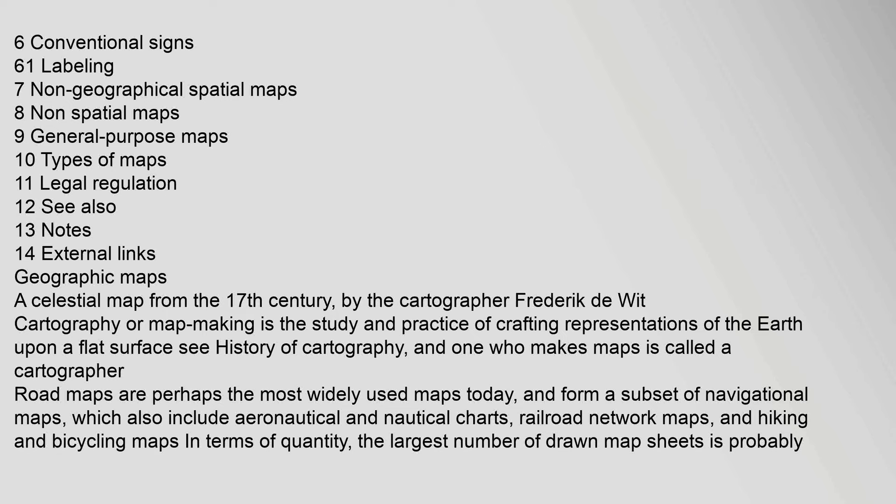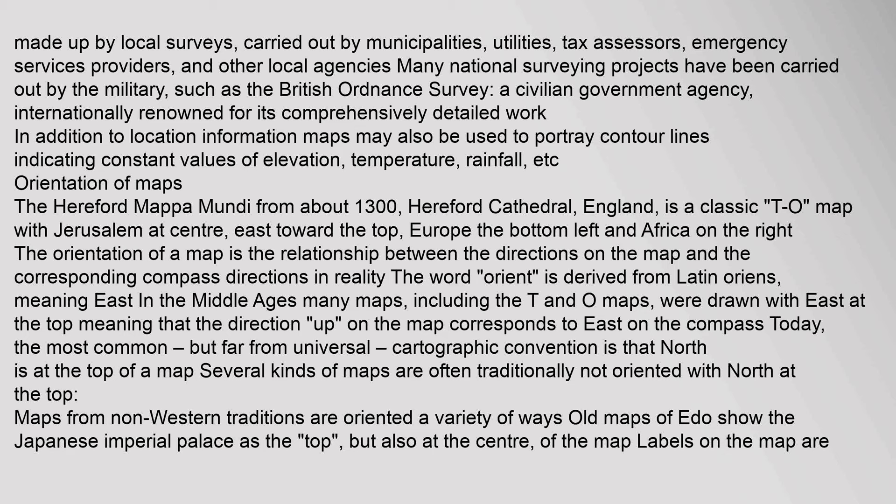In terms of quantity, the largest number of drawn map sheets is probably made up by local surveys, carried out by municipalities, utilities, tax assessors, emergency services providers, and other local agencies. Many national surveying projects have been carried out by the military, such as the British Ordnance Survey, a civilian government agency internationally renowned for its comprehensively detailed work. In addition to location information, maps may also be used to portray contour lines indicating constant values of elevation, temperature, rainfall, etc.